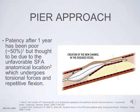The PIER approach is essentially subadventitial angioplasty. We know this has a poor patency rate over years, as the anatomical area is not the vessel itself — it's actually in the subadventitial space. We have multiple problems including location, torsion forces, and repetitive flexion, and all these things will aggravate restenosis.